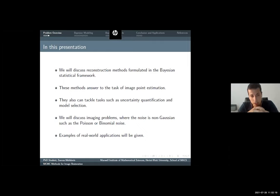I'm going to discuss imaging problems where the noise was different from Gaussian. The noise would be multiplicative and especially would be Poisson or binomial noise. In the end, I'm going to give some examples of real world applications.